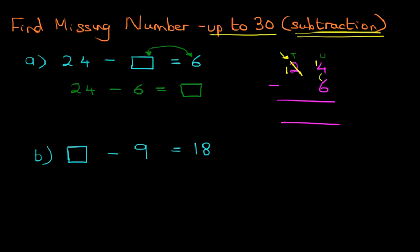The units column now reads 14 minus 6. And 14 minus 6, from your mental arithmetic, you know that that equals 8. On to the tens, we've got 1. But we've got 0 here. So 1 minus 0 is 1. The answer is 18. 24 minus 6 is 18.